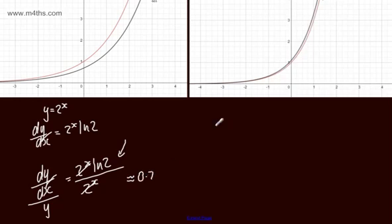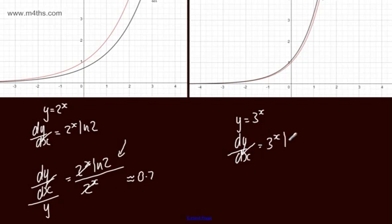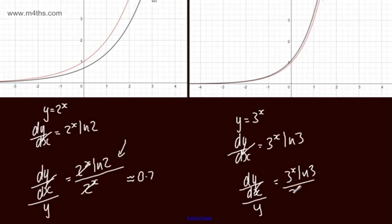If y equals 3 to the power of x, then dy by dx equals 3 to the power of x multiplied by the natural log of 3. So again, if we take the gradient function and divide it by the original function, we get 3 to the x times natural log of 3, divided by 3 to the x. The 3 to the x's cancel, giving us just the natural log of 3, which is approximately 1.1.